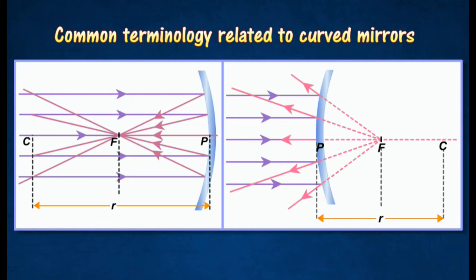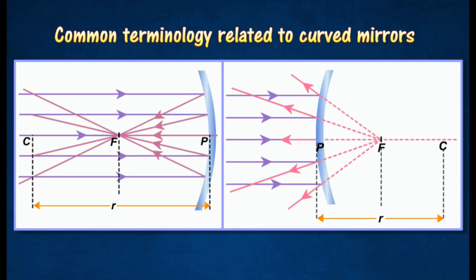The principal focus, F, of a curved mirror is the point on the principal axis where incident rays parallel and close to the principal axis converge for a concave mirror, or appear to diverge from for a convex mirror after reflection. The focal length, f, of a curved mirror is the distance of the principal focus, F, from the pole, P.